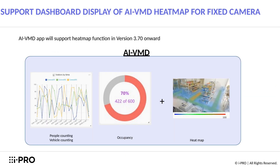This next feature is about the ActiveGuard dashboard and the ability to bring in heat mapping function for fixed cameras, whereas previously this was only available on 360-degree fisheye cameras.